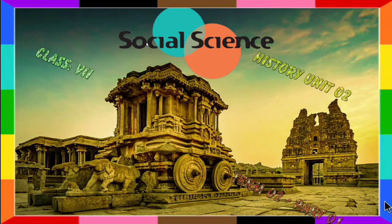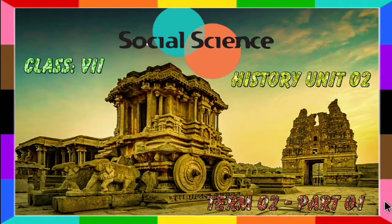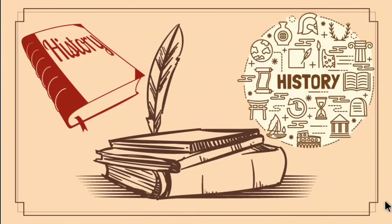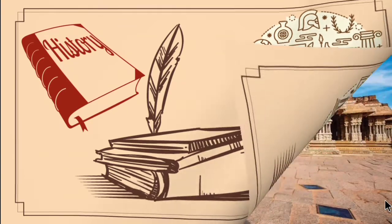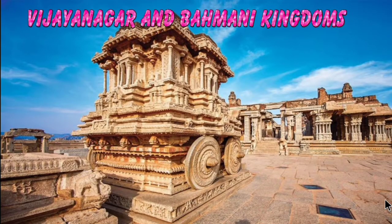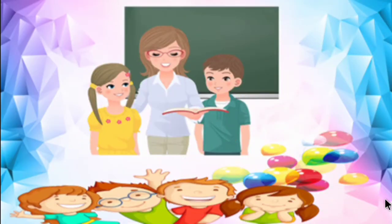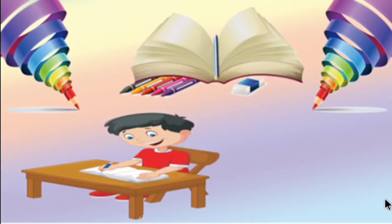Good morning students. This is session 1 of 7, standard social science, term 2, history, first unit: Vijaynagar and Bhamini kingdoms. Listen carefully to this session. In case of any doubts, you can make a note of it which shall be clarified on the day of reopening. Now let's enter into today's topic.